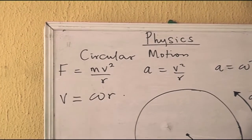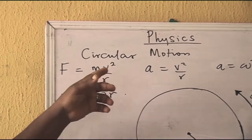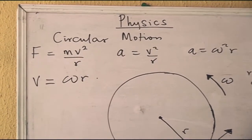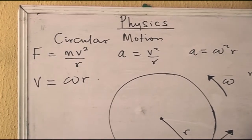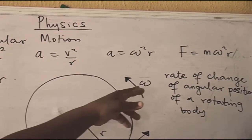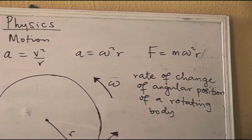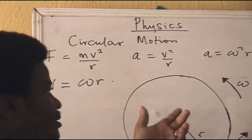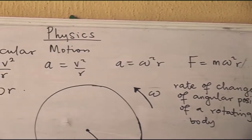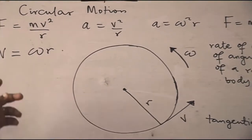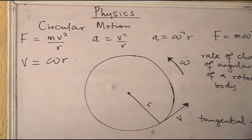The v in the formula is the tangential velocity — the velocity of the object at every tangent on the circular path of motion. We also have angular velocity, denoted by the symbol ω, which is the rate of change of angular position of a rotating body. We can express centripetal force in terms of linear (tangential) velocity or in terms of angular velocity. The relationship between tangential velocity, angular velocity, and radius is v = ωr.